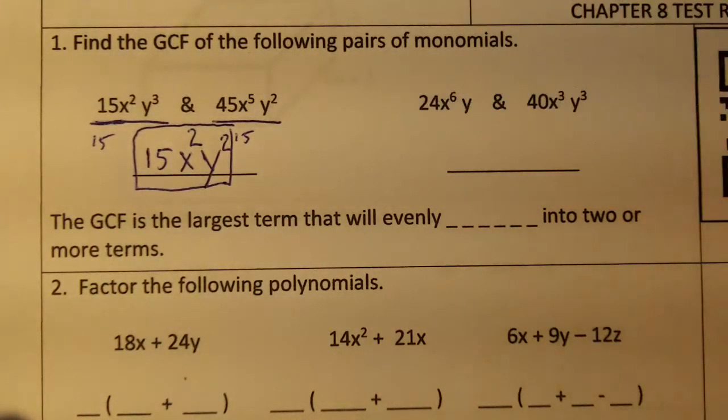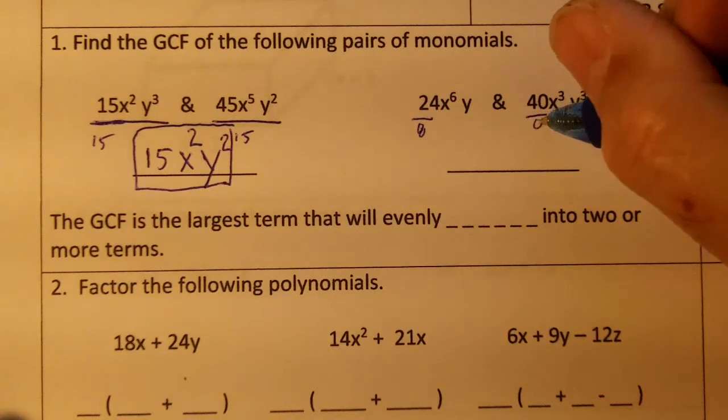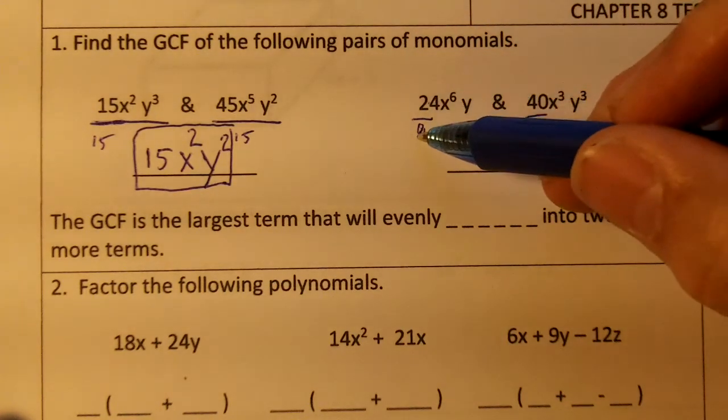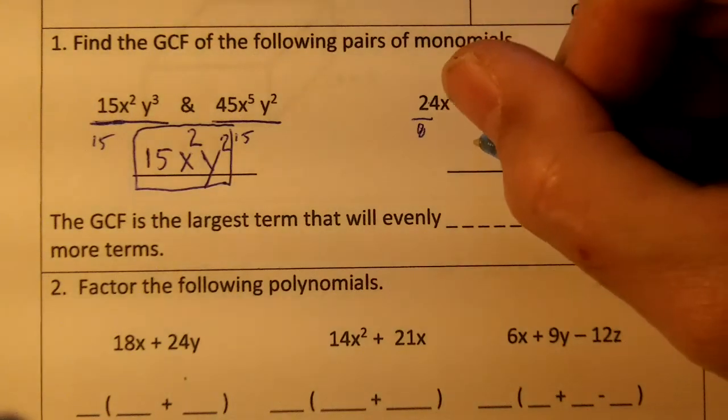This one, 24 and 40. We could divide these by 8, can't we? 24 divided by 8 would be 3. 40 divided by 8 would be 5. So 8 would be the GCF.